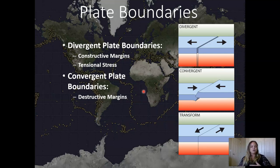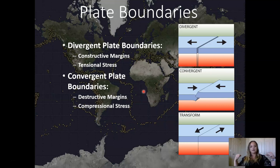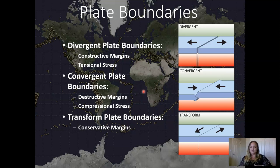Convergent plate boundaries come together and form destructive margins — they're usually destroying rocks when two plates slam together. Rocks either go upwards or one sinks below the other. You're not creating anything; you're destroying rocks or returning them to the mantle to recycle. This forms under compressional stress. Transform plate boundaries are when plates slide past each other — called conservative margins because they're not creating or destroying anything, just conserving what is there. You see offset on the surface, and this forms from shear stress.